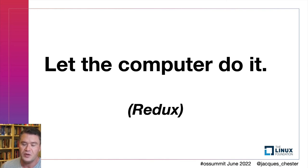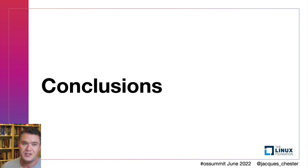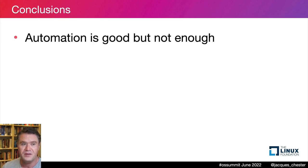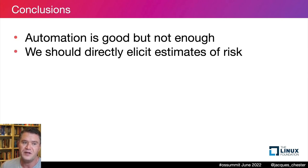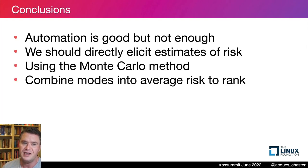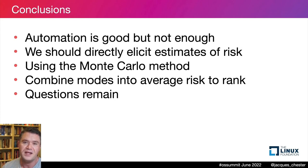In summary, we should rely on data-driven prioritization to the degree we can, but where we can't, we need expert judgment. I recommend directly eliciting estimates of risk frequency and risk magnitude and combining these using a Monte Carlo method, combining estimate modes into a single average risk level which can then be sorted to produce a ranking of projects by risk. A number of outstanding questions remain before this approach can go into production, but I hope I've at least inspired your confidence in the approach. Never forget that we are here to prioritize the retirement of trillions of dollars of risk — taking a little time to solidify our approach is time well spent. Thank you.